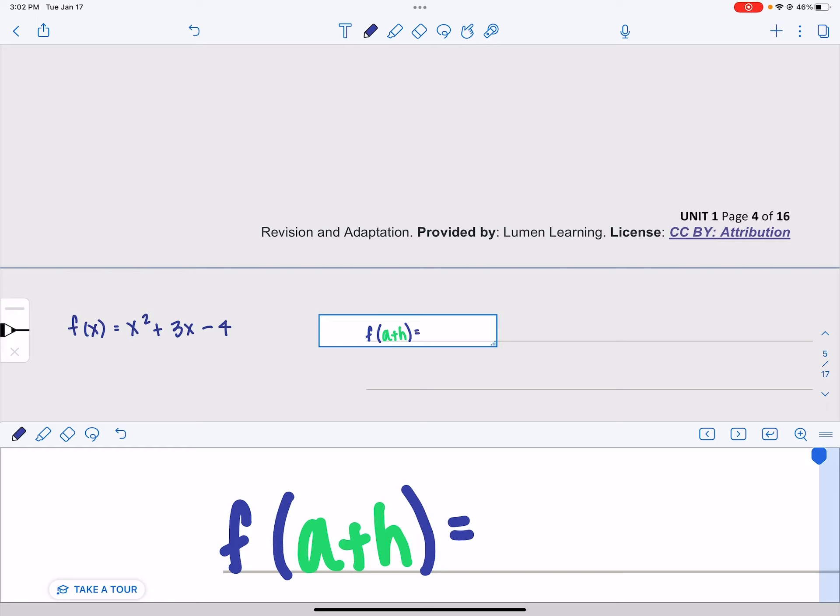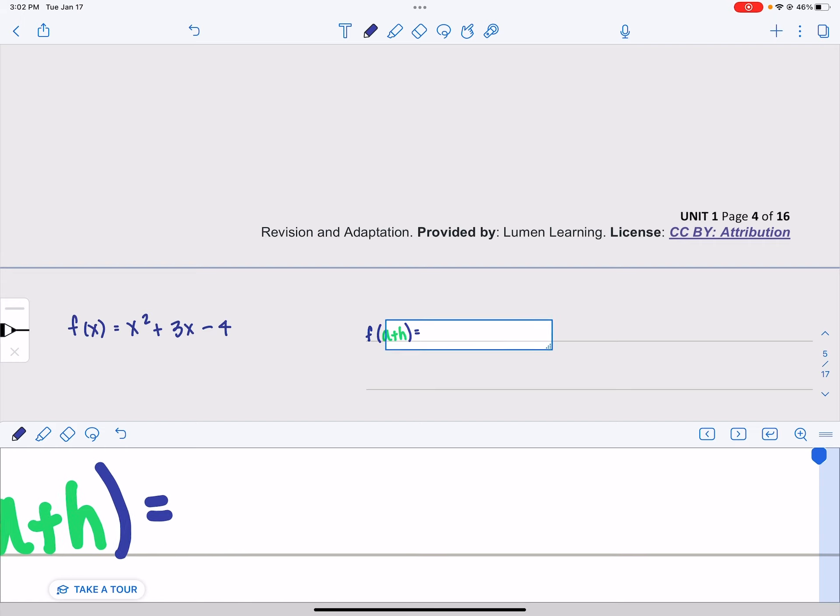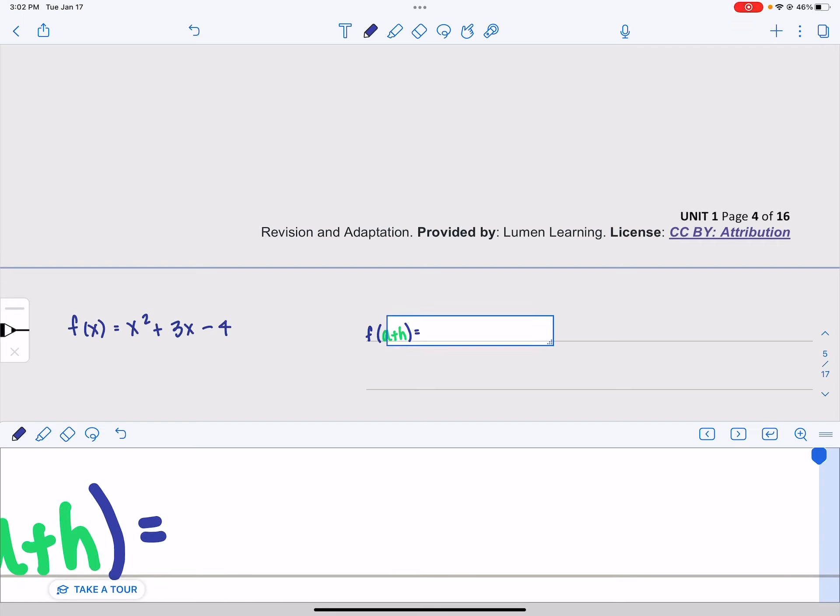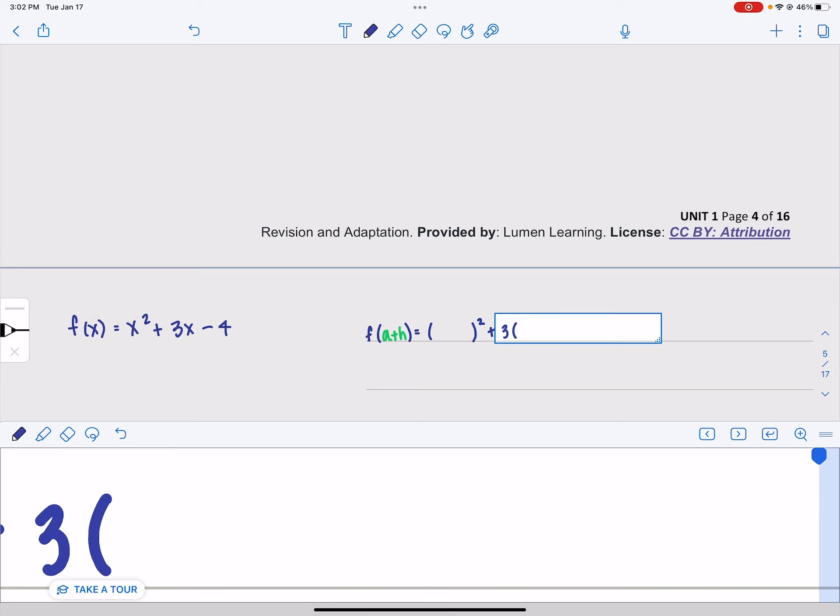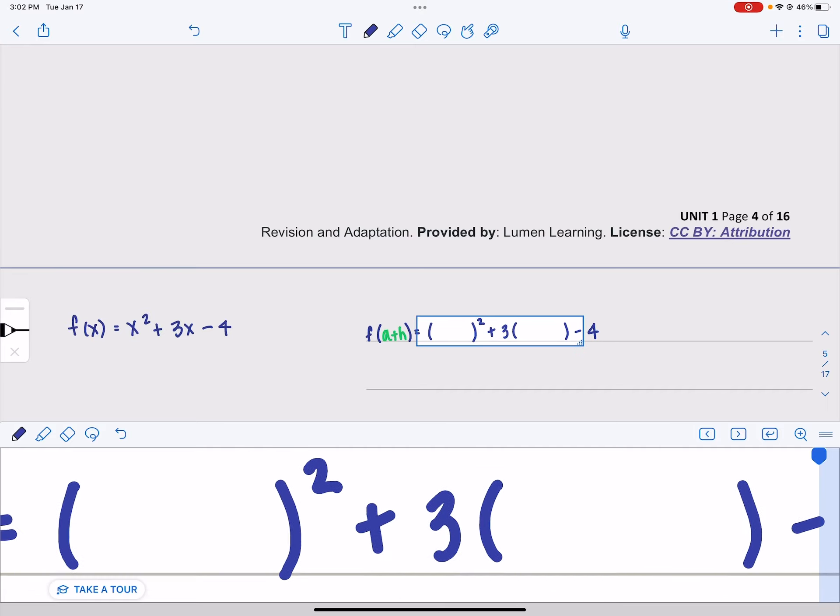So I'm going to start writing my original function but I'm going to leave holes where the x's are. So this would be a hole squared plus three times my hole minus four. Then I'm going to go fill in my hole with a plus h.